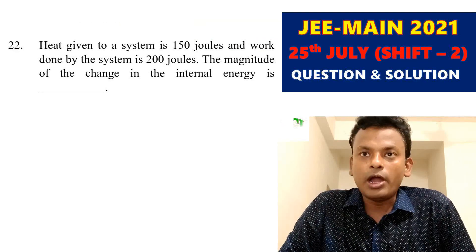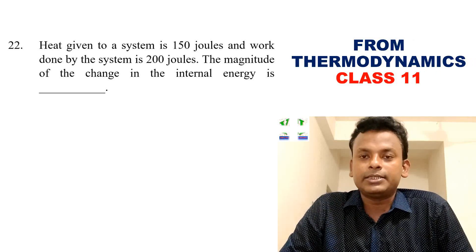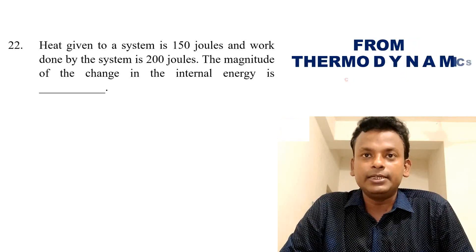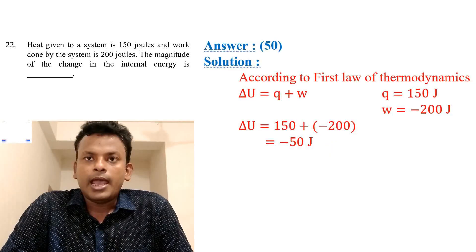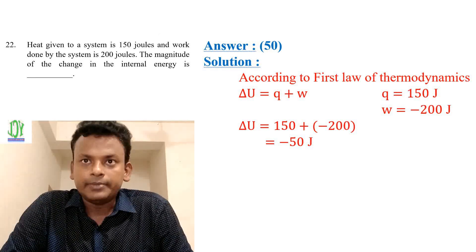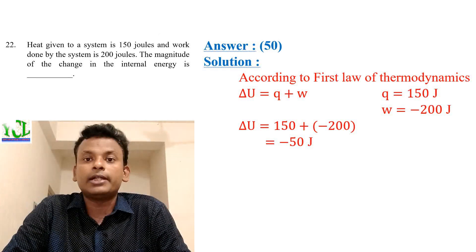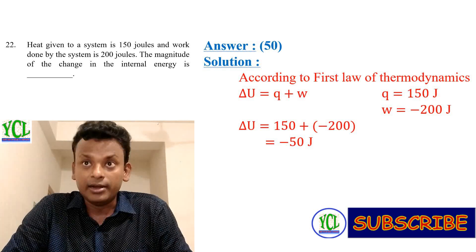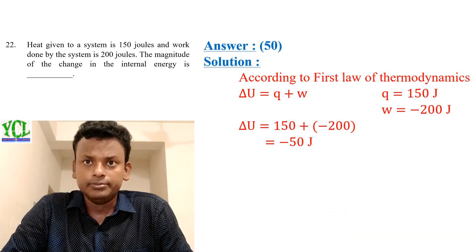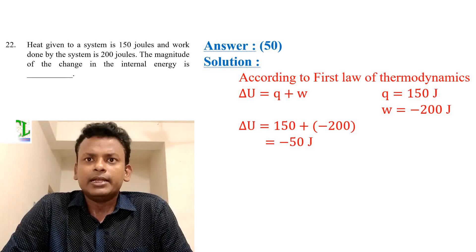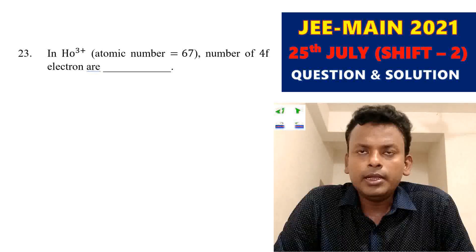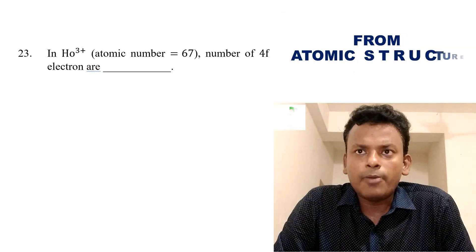Question 22: Heat given to a system is 150 J and work done by the system is 200 J. The magnitude of change in internal energy is? According to the first law of thermodynamics, ΔU = q + w, where q = 150 J and w = −200 J (work done by system). So ΔU = −50 J. The magnitude is 50 J.